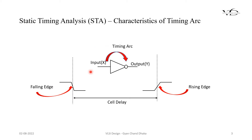For example, we have an inverter cell and the inverter cell has one input and one output, so there is a single timing arc available. If you remember from the previous chapter, timing arcs go from each input of a cell to each output. Here we have only one input and one output, so we have one timing arc. Now we are going to see how the delay of this timing arc is calculated.